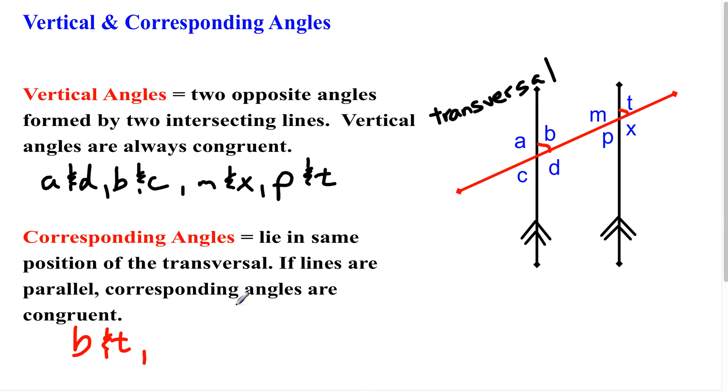We have four sets of corresponding angles. We also have A because that's the top left and M. So I'm going to go ahead and write that here. A and M. We also have C and P because those are the bottom left. And then finally, the bottom right would be considered D and X.